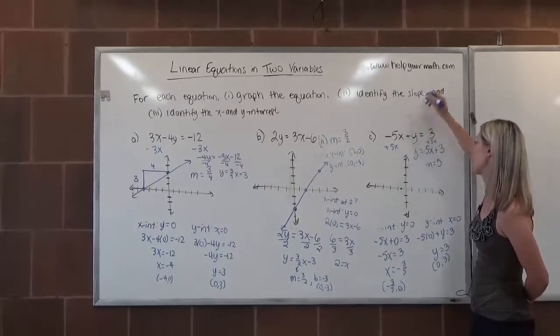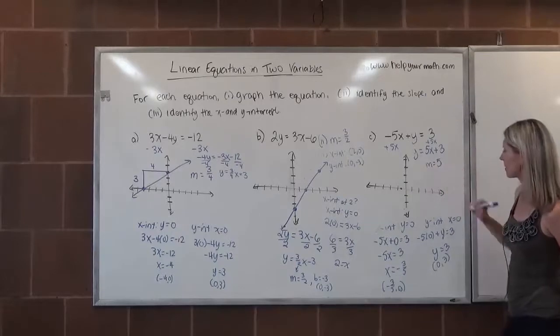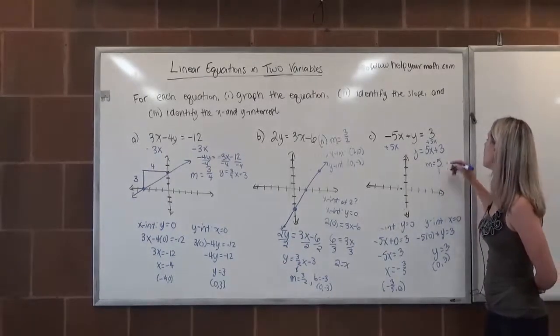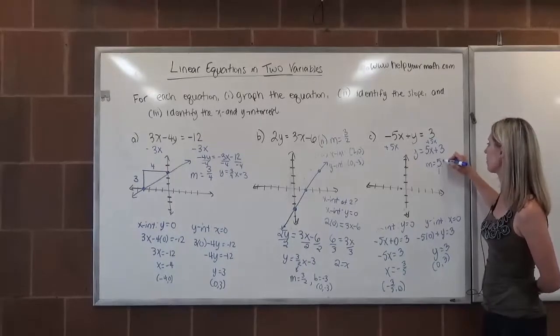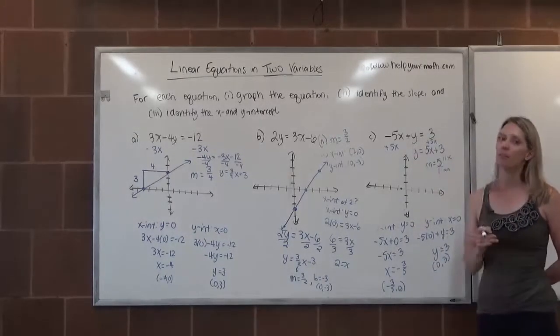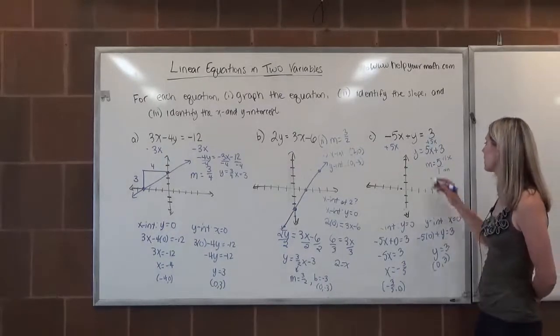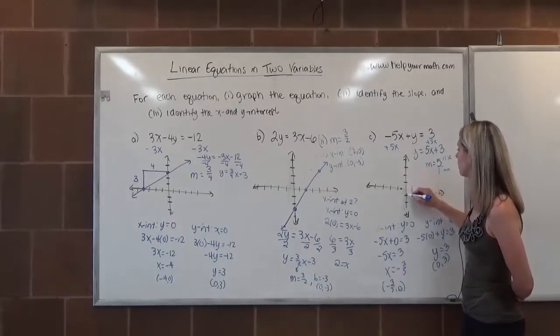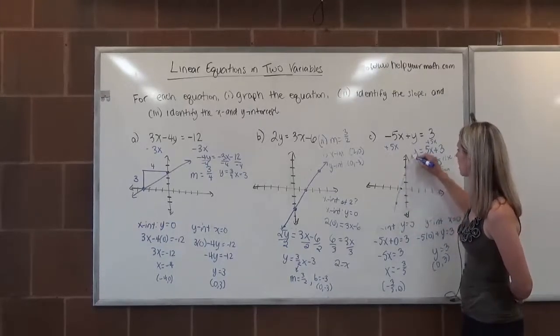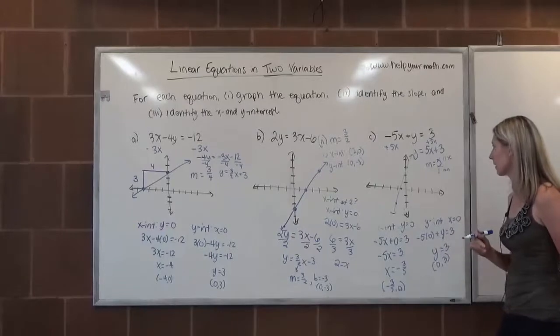So first of all, I want this to be a fraction. To change 5 into a fraction, we can put it over 1. That gives me a ratio now. So this is my rise, and this is my run. But since I can't go up 5 units because I run out of graph, instead I'm going to go down 1, 2, 3, 4, 5, and to the left 1. These 3 points should be in a nice straight line, and the graph would look something like that.